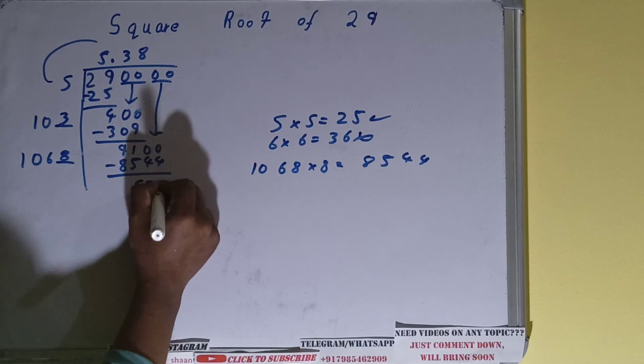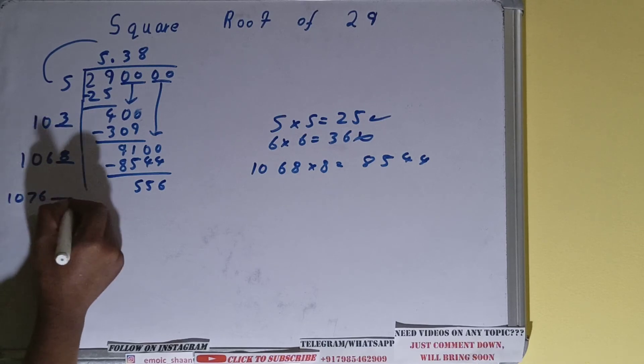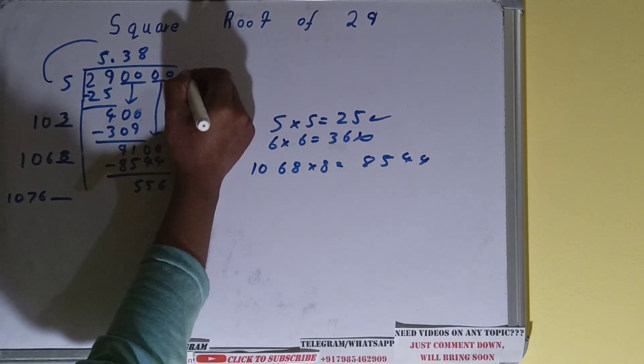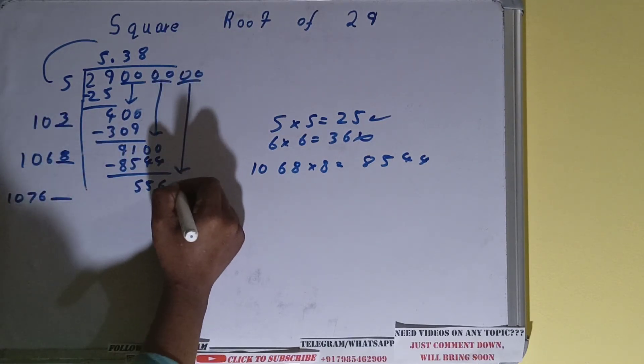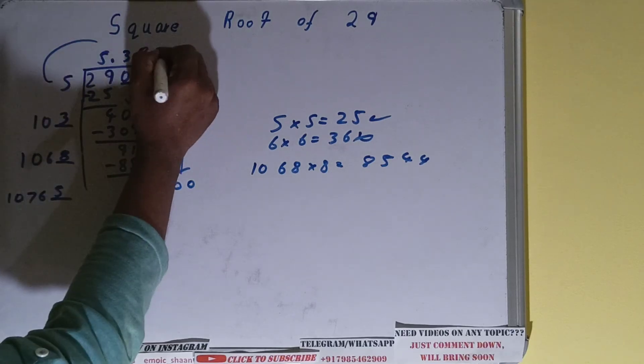We will be left with 5556. Again do the same thing: 1068 plus 8 is 1076, and one extra digit over here. Consider one more pair of zeros, so we'll be having 55600. Now it looks clear, because if you take it as 10 times 5 is 50, we can take 5 here and 5 here.